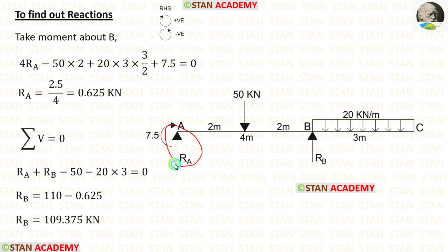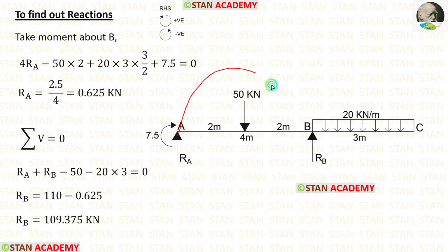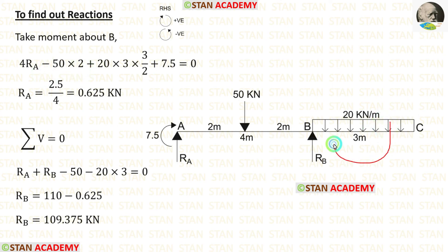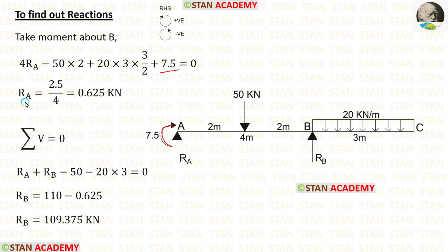Now we are going to calculate the reactions using the whole beam. For MA, we got a positive value, so it acts in the clockwise direction. To calculate RA, I take moments about B, moving towards the right-hand side with clockwise positive. RA acts clockwise with distance 4, so we have 4RA. The point load 50 kN acts anti-clockwise with distance 2, giving minus 50×2. The UDL acts clockwise. Solving, we get RA equal to 0.625 kN.